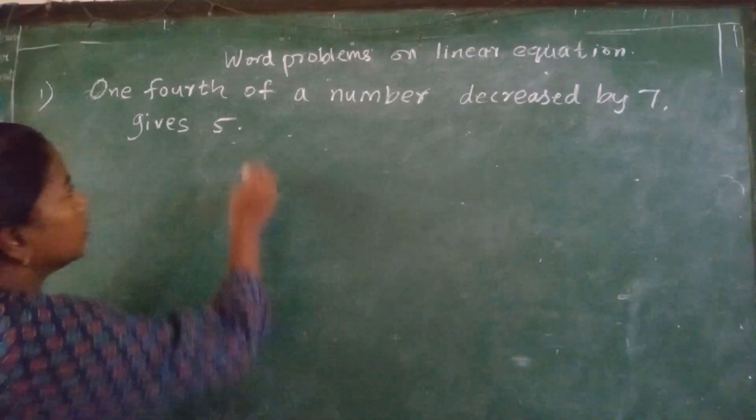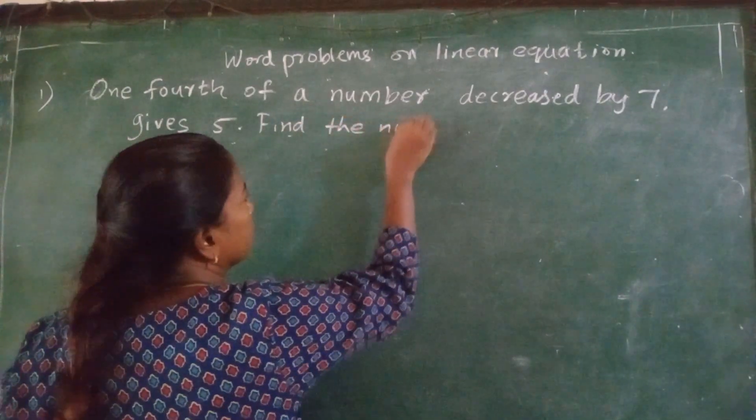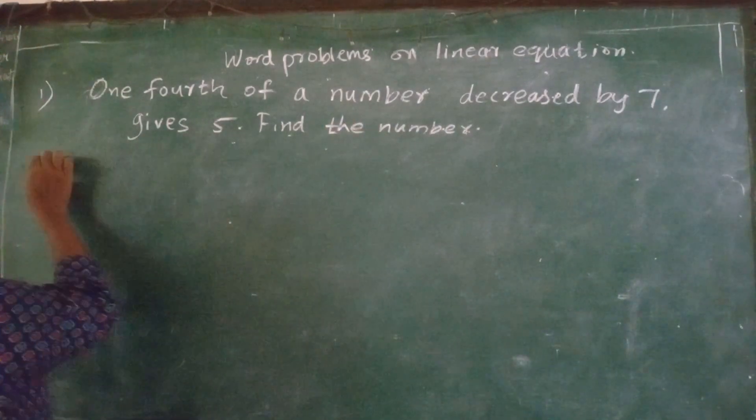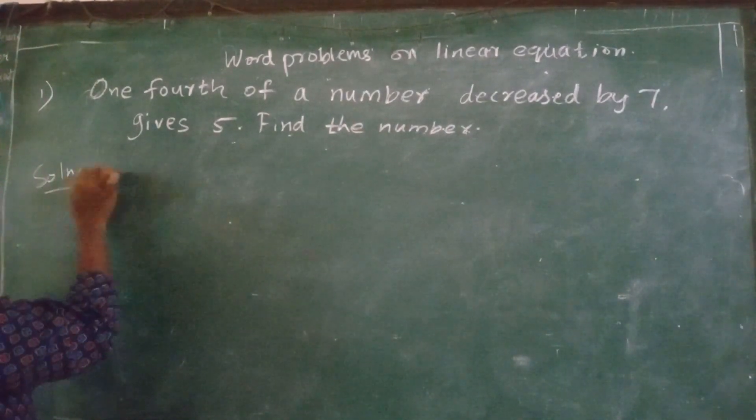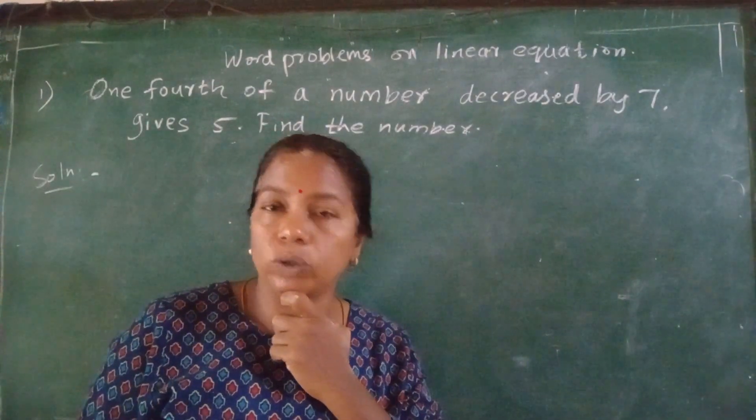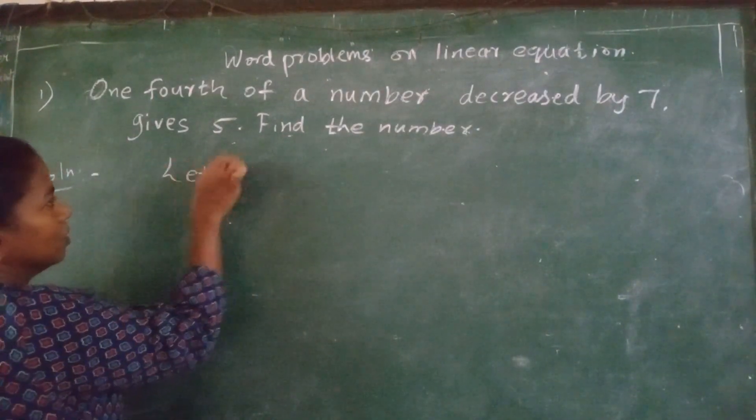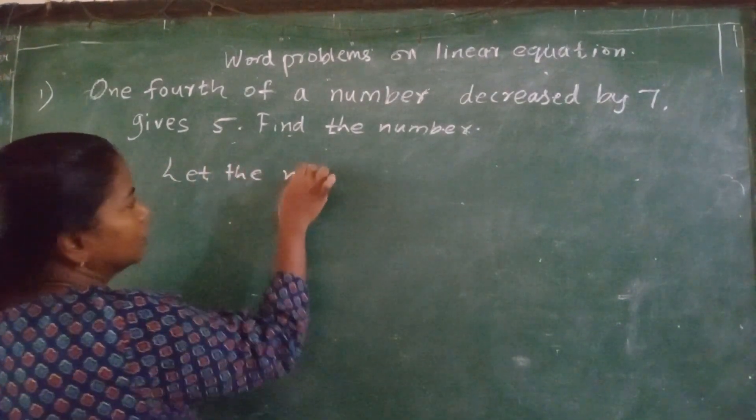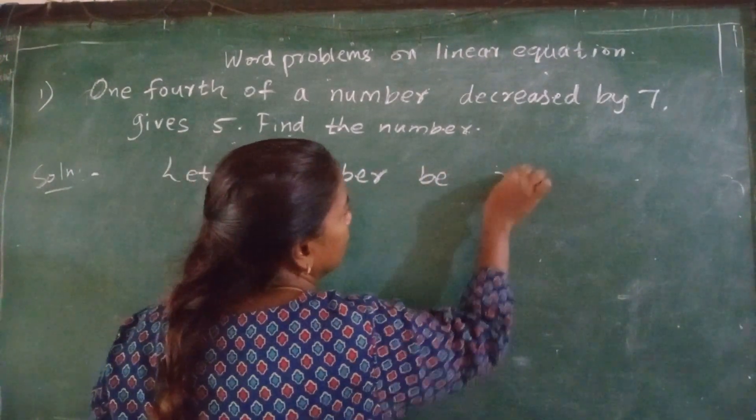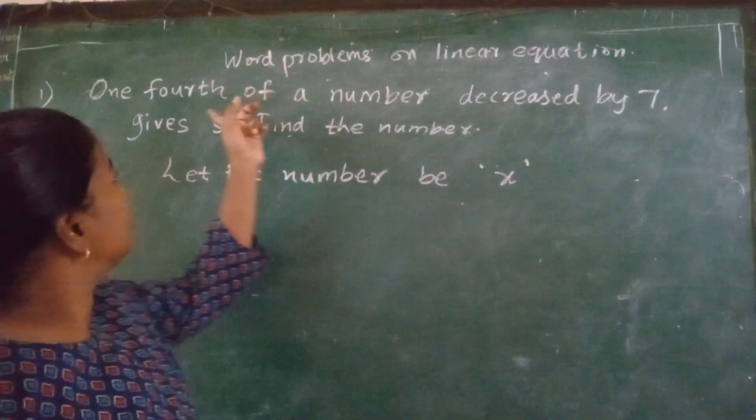Now what do you have to do? You have to find the number. So, now what is the number? I don't know the number. So what will I do? I will consider it as X. So, let the number be X. X is the number. Now what is the condition mentioned here?